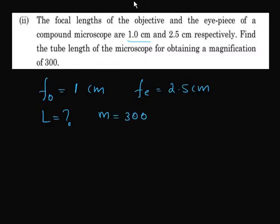So in this question we can use the direct formula that is M is equal to L by fo into D by fe. So M is 300 which is equal to L by fo that is 1.